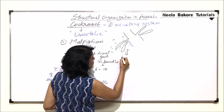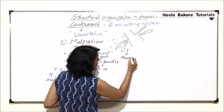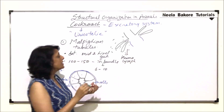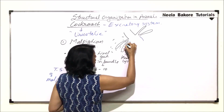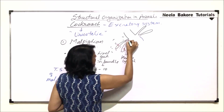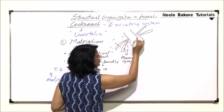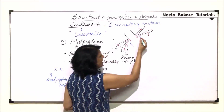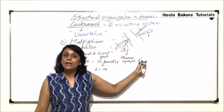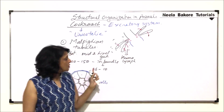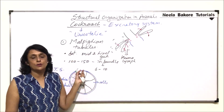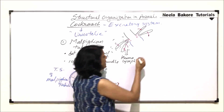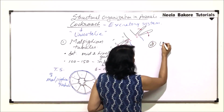The Malpighian tubules lie in the body cavity filled with haemolymph. From the haemolymph, these tubules absorb the waste, and finally the waste is dumped into the hindgut. Ultimately the waste is eliminated through the alimentary canal. So the main excretory organ or structure is the Malpighian tubule.